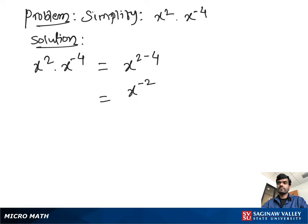To make the power of x positive, we move x to the bottom. So we can write 1 over x squared, which is our answer.